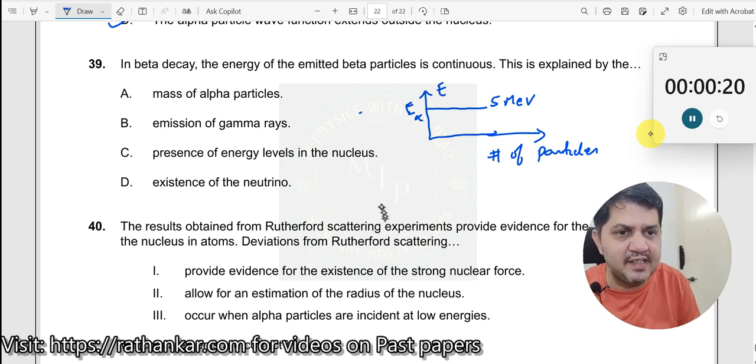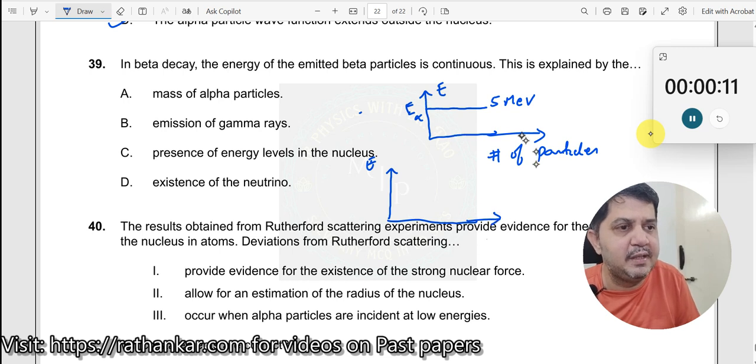If that is the case, beta particles also come in a similar way. So if you plot a graph of the energy of the beta particles versus the number of particles, you should also expect something like this, but you are not getting that. Instead, you are getting it like this.